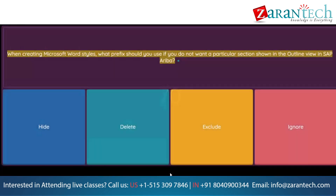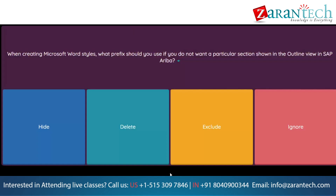Question: When creating Microsoft Word styles, what prefix should you use if you do not want a particular section shown in the outline view in SAP Ariba? Option 1: Hide. Option 2: Delete. Option 3: Exclude. Option 4: Ignore.